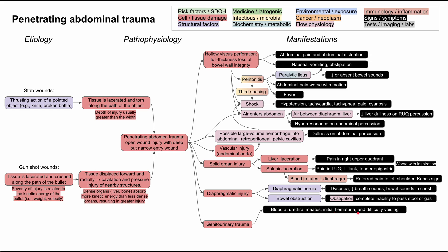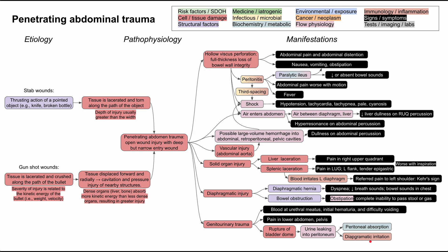Genitourinary trauma can also present as difficulty voiding and pain in the lower abdomen or pelvis. If you have rupture of the bladder dome — the large anterior portion of the bladder — urine can leak from the bladder into the peritoneum. This can irritate the diaphragm since urine is slightly acidic and not meant to be in the peritoneal space. When urine is in the peritoneal space, the peritoneum will reabsorb it, and on lab values you can see increased BUN and increased creatinine, as these are normally excreted but get back into the bloodstream.